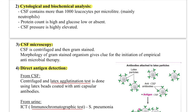CSF microscopy: the CSF is first centrifuged, then Gram stained. Gram staining reveals the morphology of the bacteria, which provides clues for initiation of empirical antimicrobial therapy. 'Empirical' means guesswork — when you see the morphology of the bacteria, you can guess the type of organism and begin treatment.